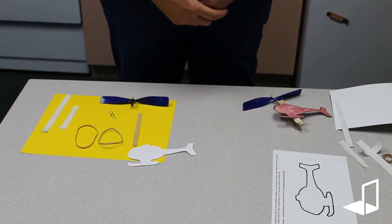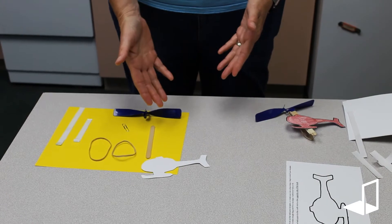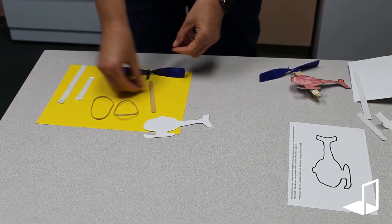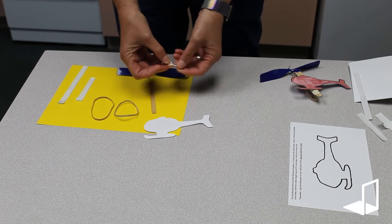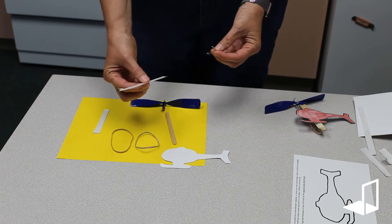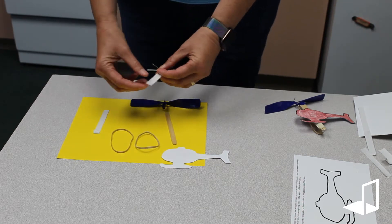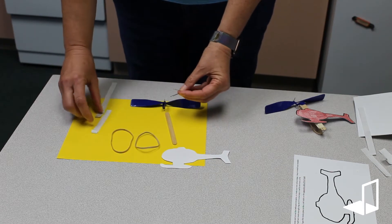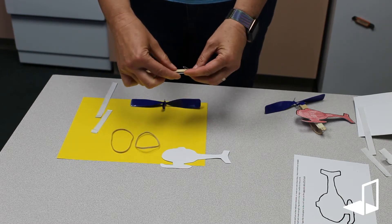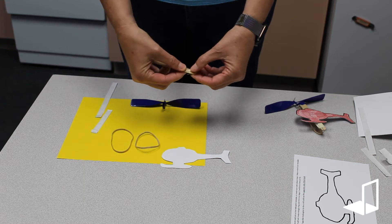The next step is you're going to take your paper clip and bend it kind of in a V-shape. You can use tape, but we're going to provide some contact paper that you can use in place of tape. You're going to tape the larger part of your paper clip onto your craft stick.